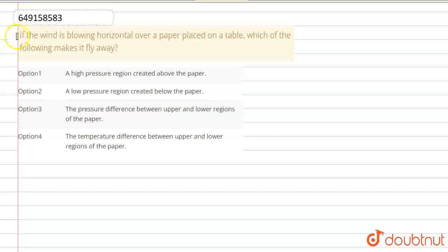My question is: If the wind is blowing horizontally over a paper placed on a table, which of the following makes it fly away? The options are: a high pressure region is created above the paper, a low pressure region is created below the paper, the pressure difference between the upper and lower regions of the paper, or the temperature difference between the upper and lower regions of the paper.